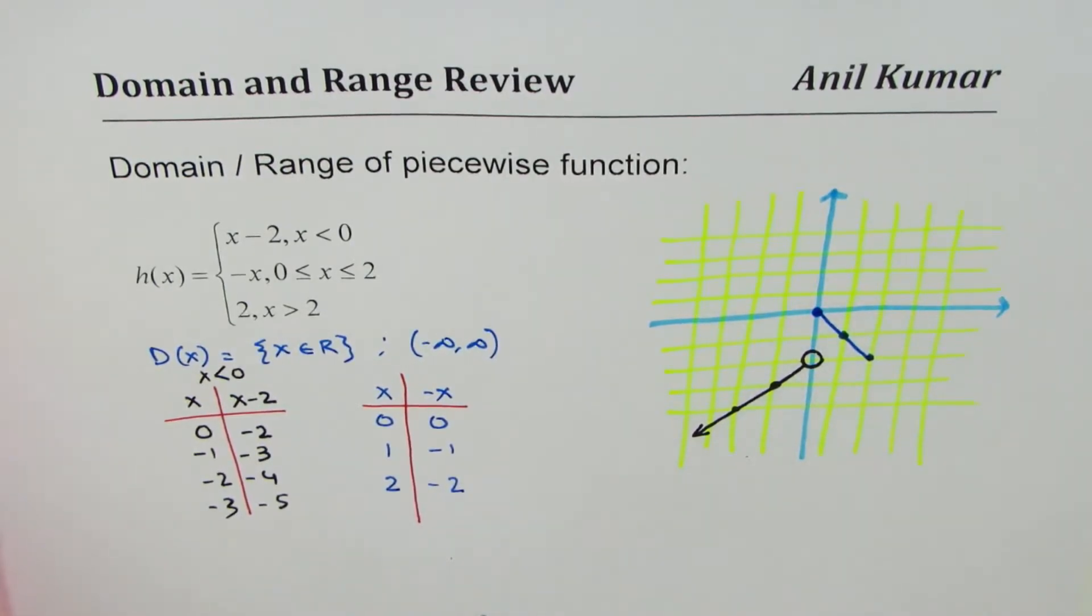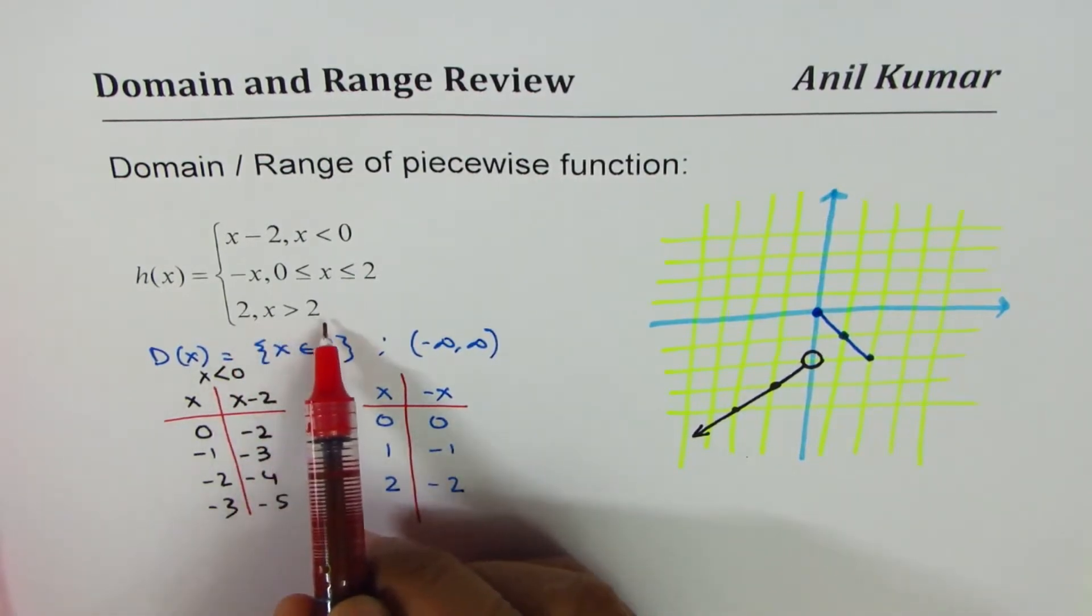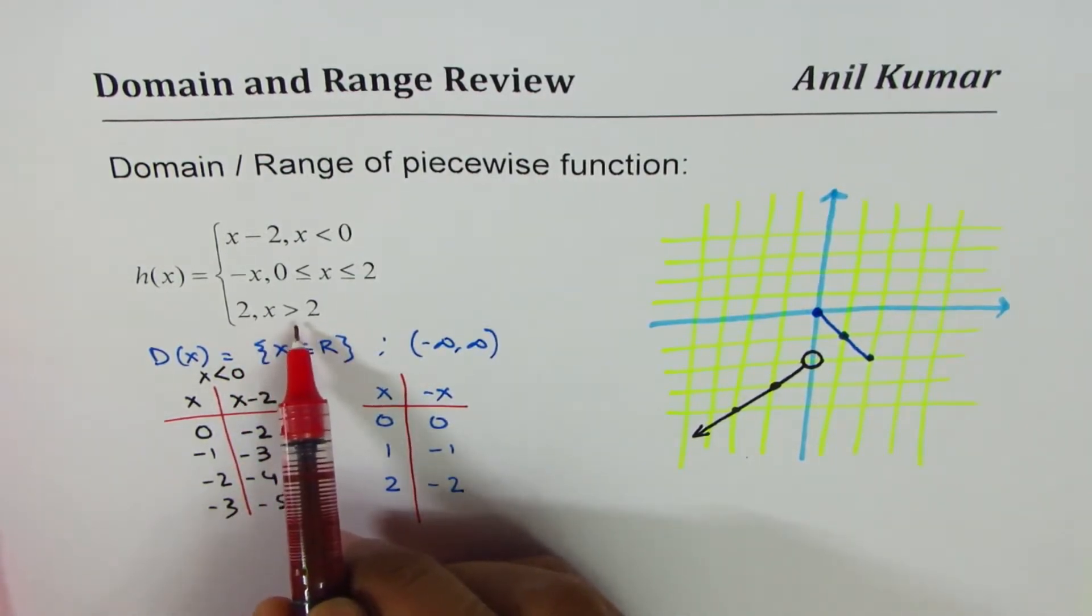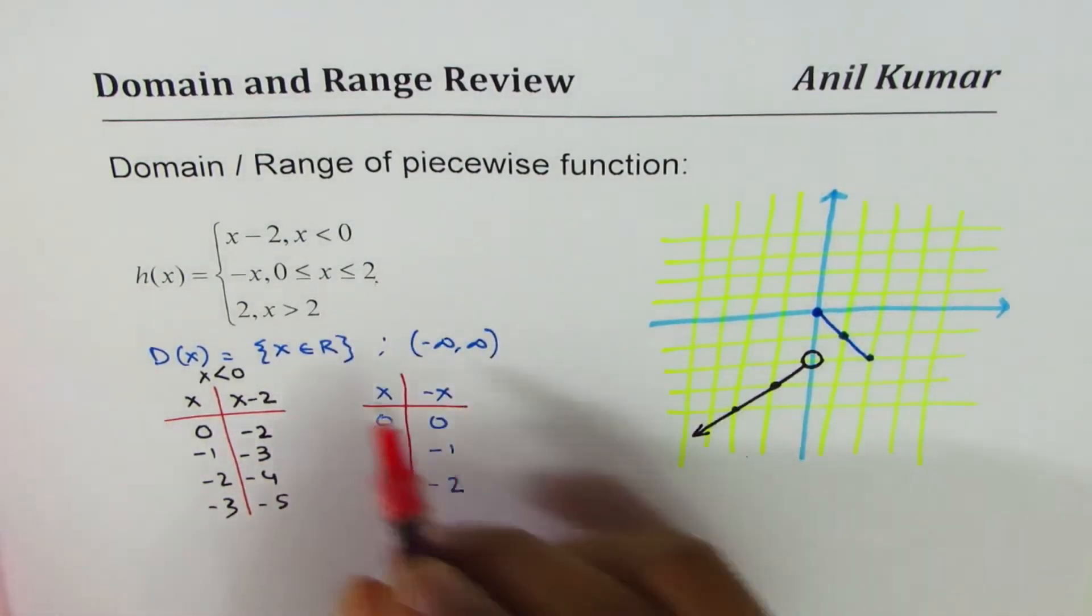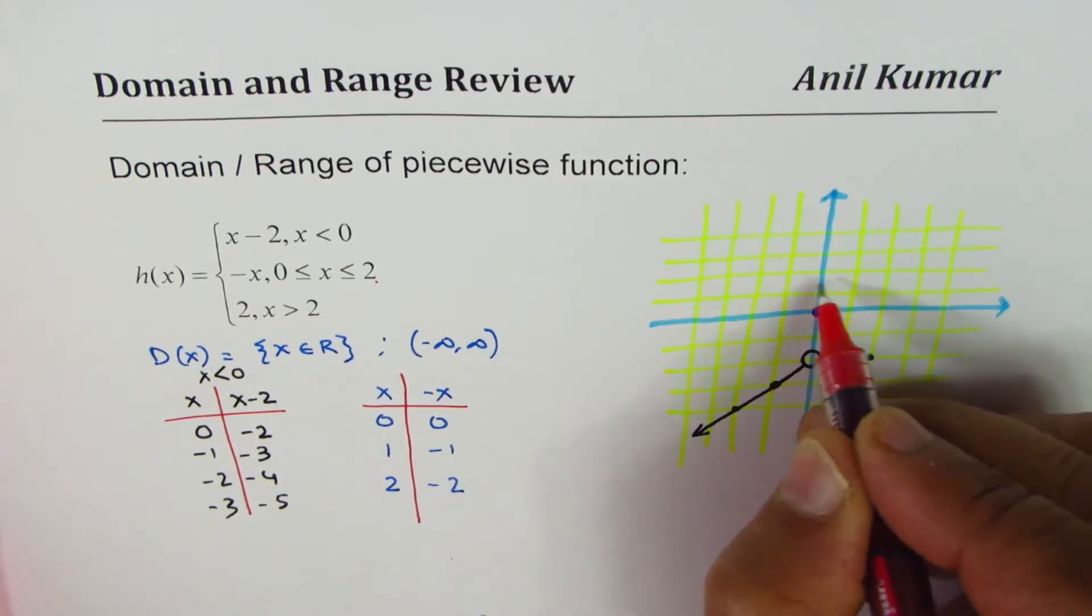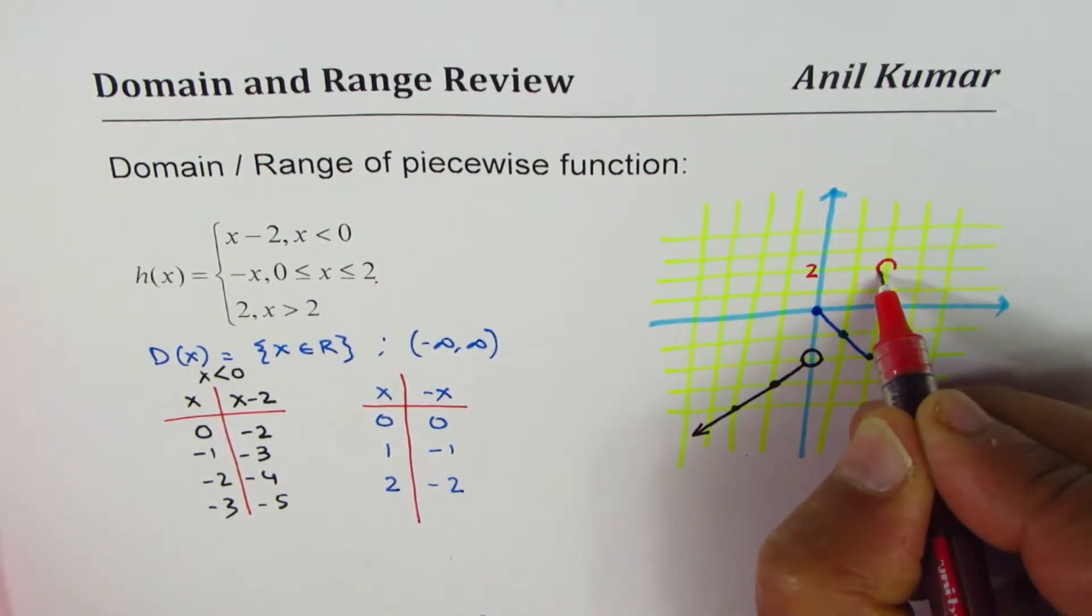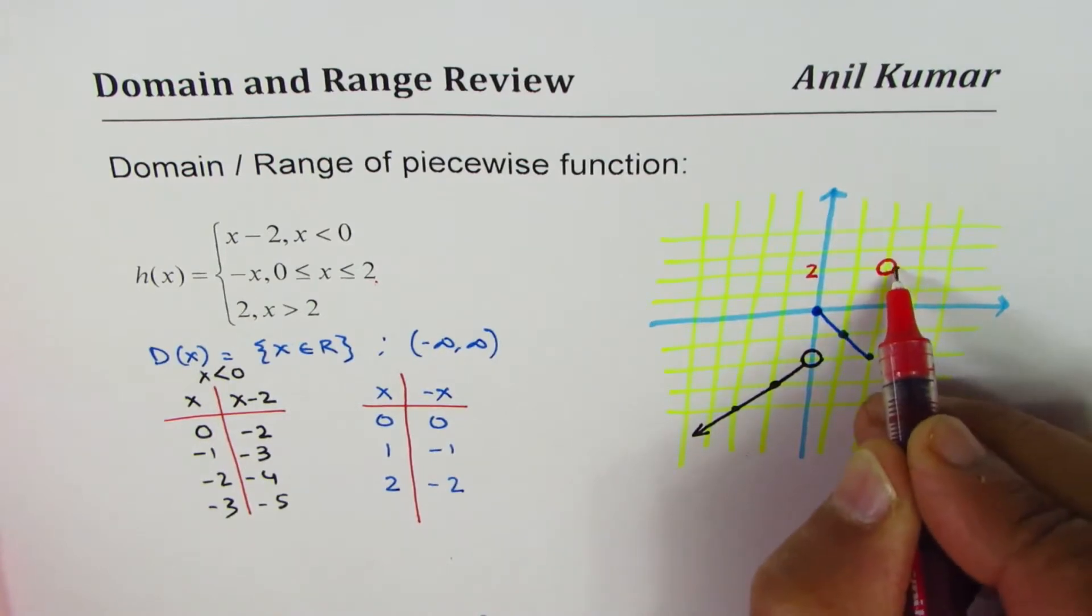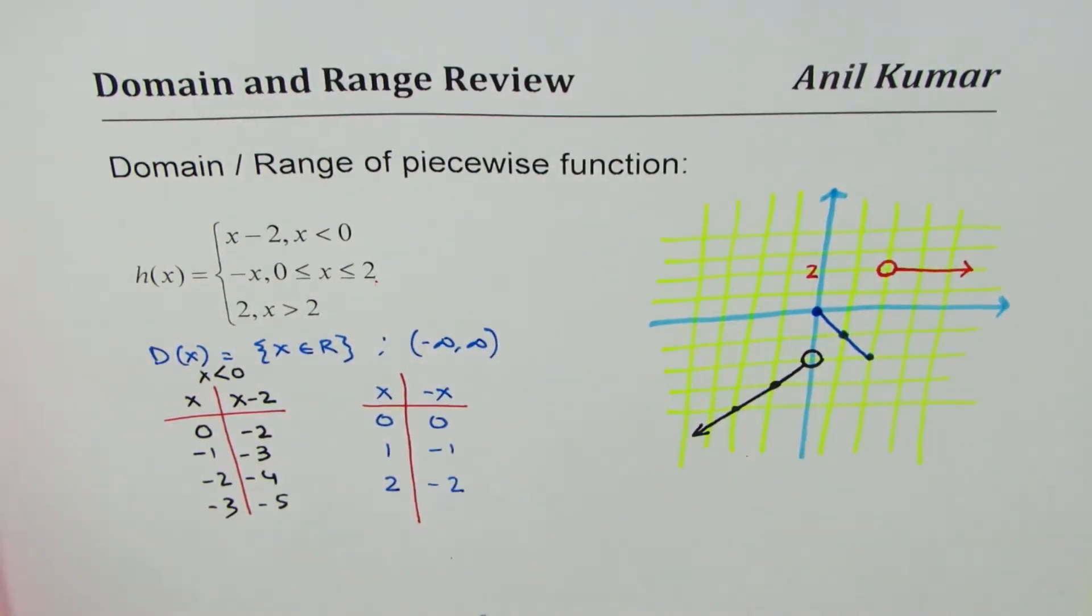The third piece here is a constant function 2 for x greater than 2. The function is 2. Greater than 2 means at 2 the value actually is this value but here it is a hole. So at 2 it is 2. Greater than 2 like this, an arrow horizontal line signifies your constant function h(x) equals to 2.